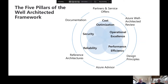The Azure Advisor tool also has recommendations around the five pillars of the well-architected framework, such as operational excellence. With operational excellence, we really start diving deep into things like our methodologies, such as DevOps or DevSecOps, using automation, using infrastructure as code. And what this really does is it removes a lot of the human error from deployments or code deployments.